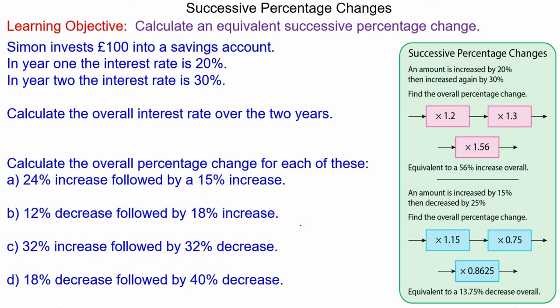In this lesson we're going to calculate a successive percentage change. Simon invests 100 pounds into a savings account. In year one the interest rate is 20 percent. In year two the interest rate is 30 percent, and we're going to calculate the overall interest rate over the two years.